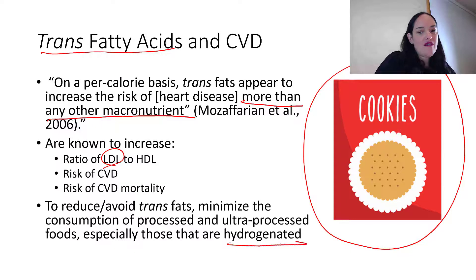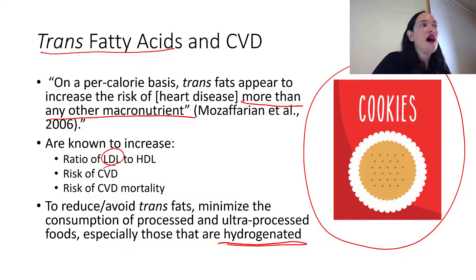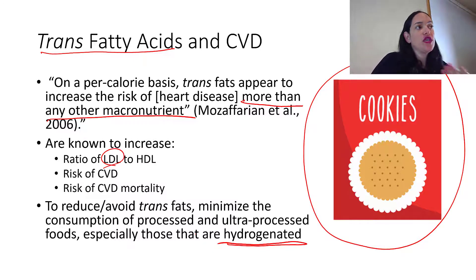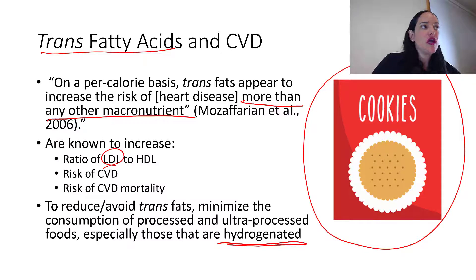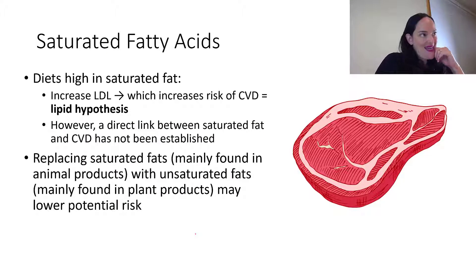Trans fatty acids are especially found in processed foods that have the word 'hydrogenated' on the label. Luckily, as discussed in chapter 2, Canadian health policy has gone to great lengths to alert the public of the dangers of trans fat and to slowly remove them from the food supply, so we're going to see less and less of it, which is a great thing.